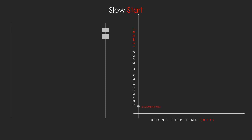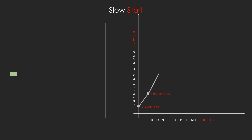In our example, we send two segments initially. Once an acknowledgement is received, the cwnd increases to four MSS. Similarly, upon the next acknowledgement it increases to eight MSS, and then to sixteen MSS — an exponential increase of the congestion window during slow start. But to what extent does it continue this exponential increase?